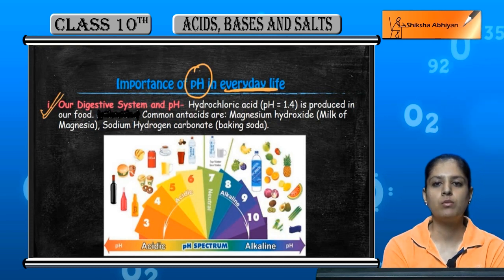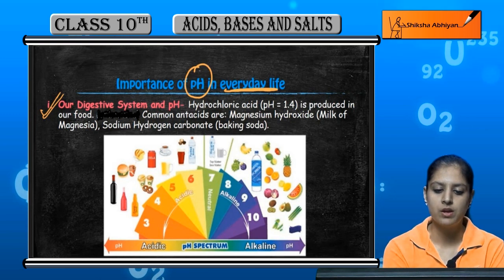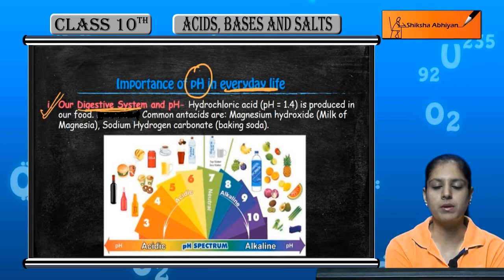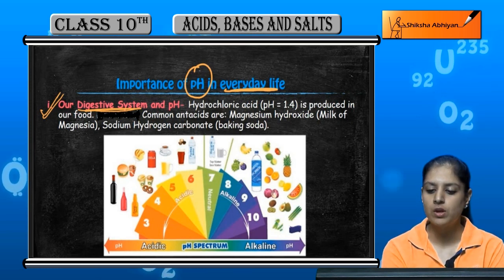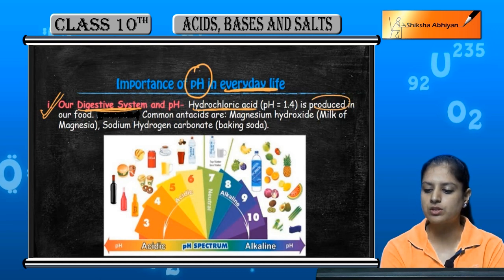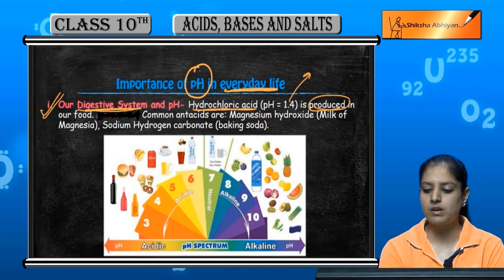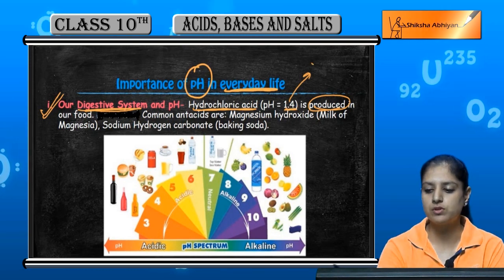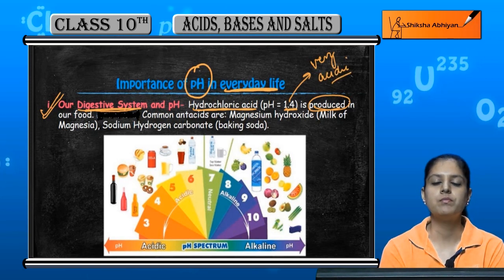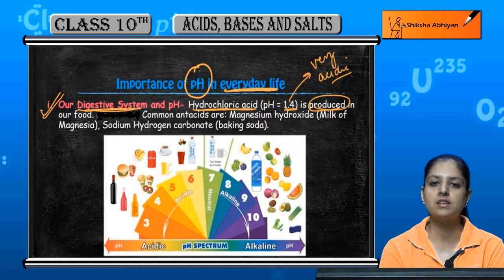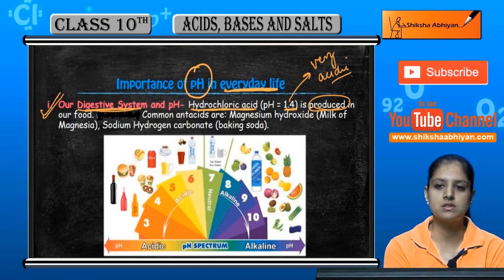The most important thing about pH in our life is our digestive system. The digestive system of human beings involves the production of hydrochloric acid. Hydrochloric acid is produced in the body and its pH is 1.5, which is very acidic. A pH of 1.5 means a high strength of acid.